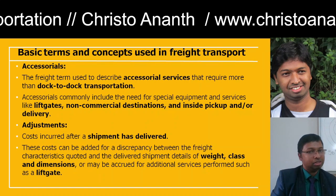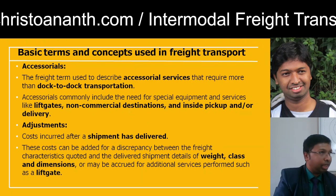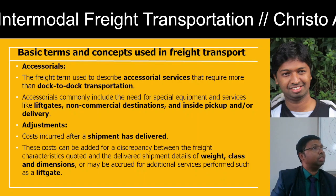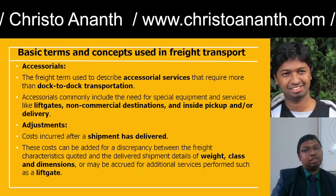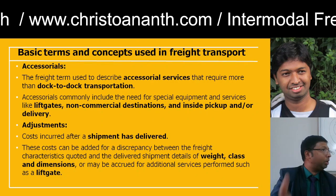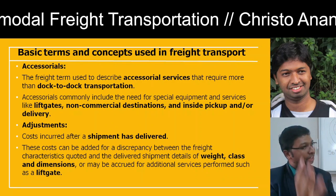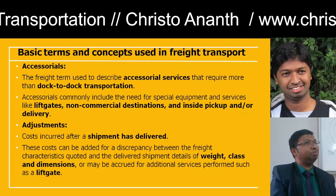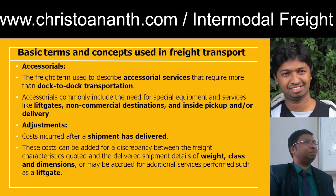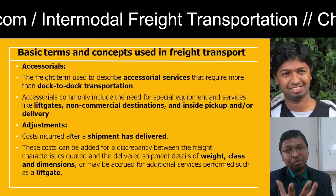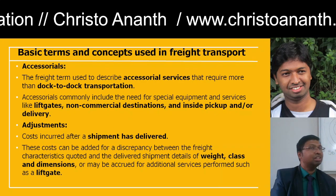Next is 'Adjustments': the cost associated with the delivery of a shipment from one end to another. This cost accounts for discrepancies between freight characteristics — the weight, class, and dimensions. A package may have a uniform size or an irregular shape, and pricing is adjusted according to these parameters.